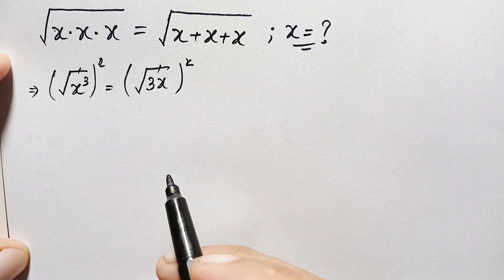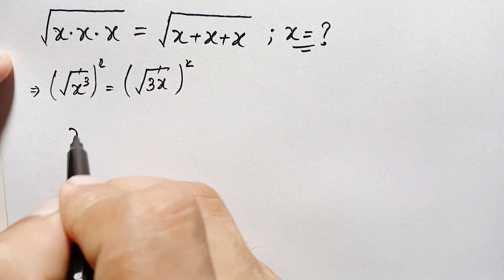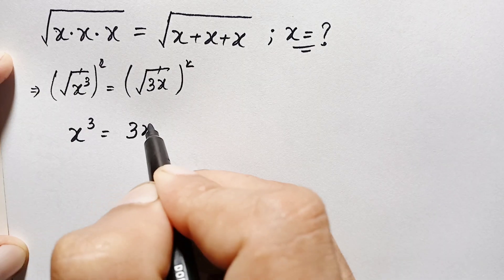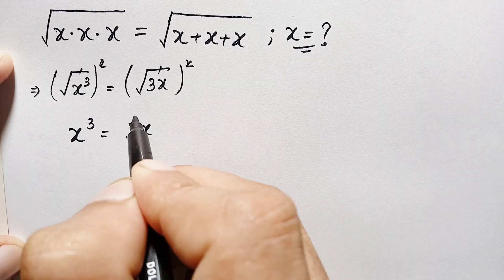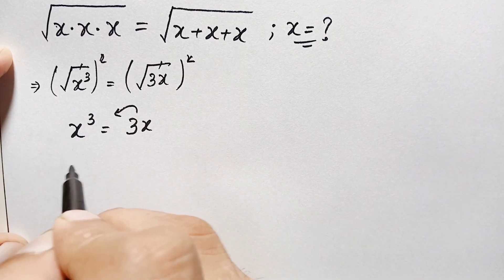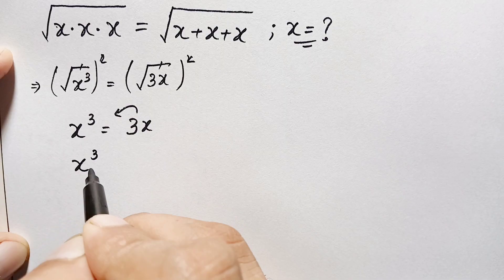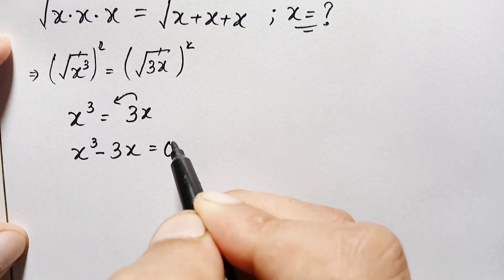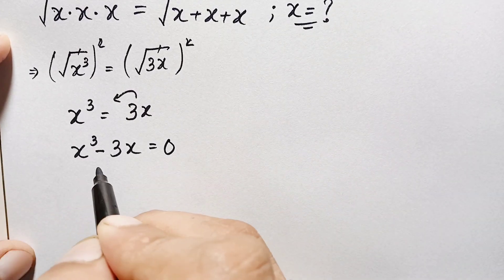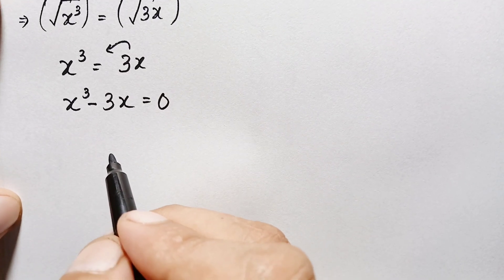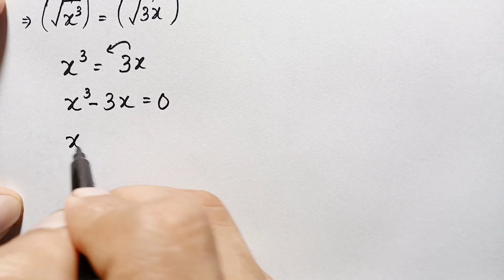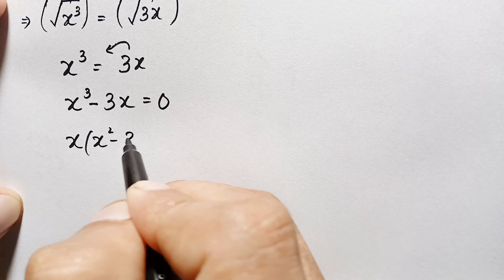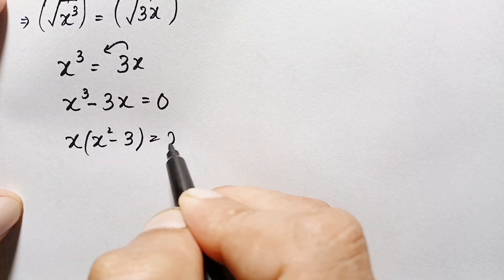After squaring both sides, the square roots cancel and we get x cubed is equal to 3x. Taking 3x to the left hand side gives x cubed minus 3x equals 0. Since there is an x common factor on the left, we factor it out to get x times (x squared minus 3) equals 0.